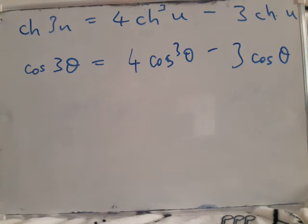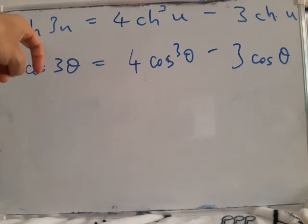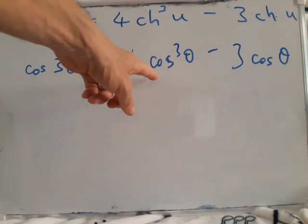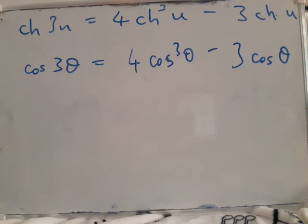So, Osborne's rule simply says that you can change any cos into cosh, and we get the result immediately.